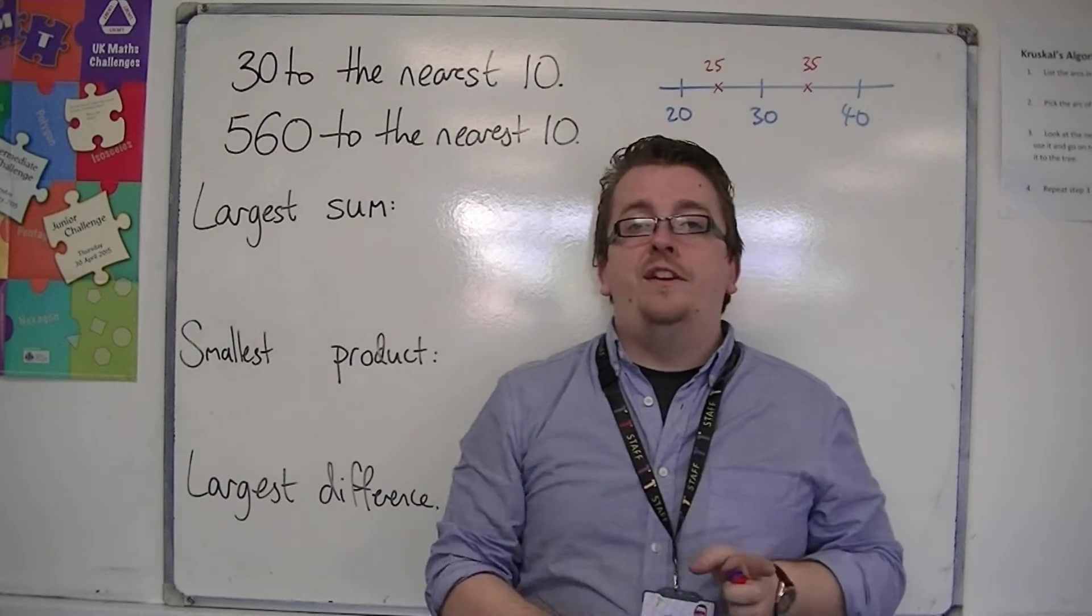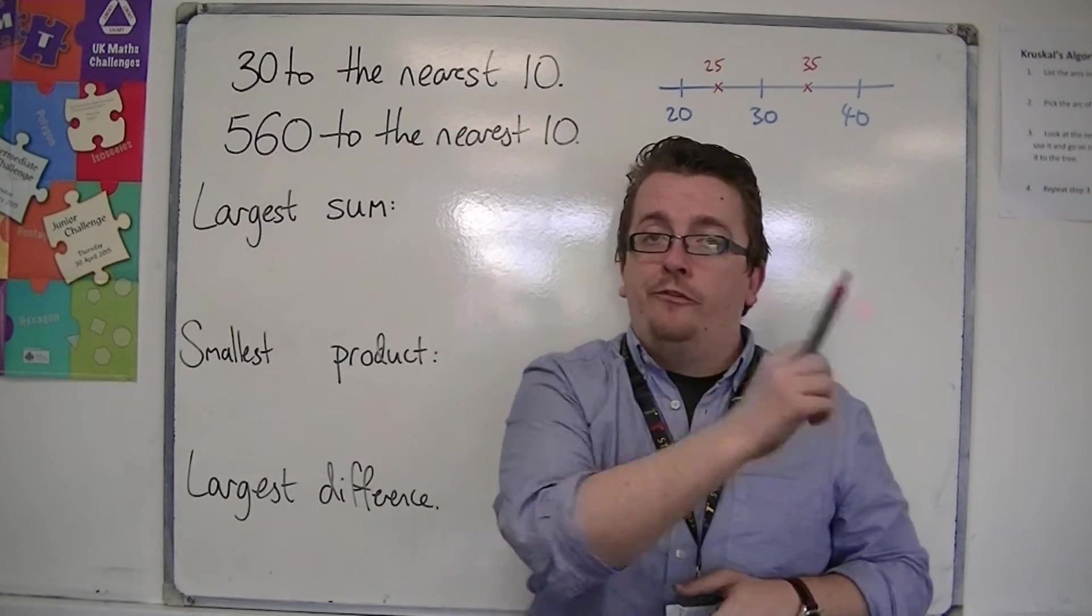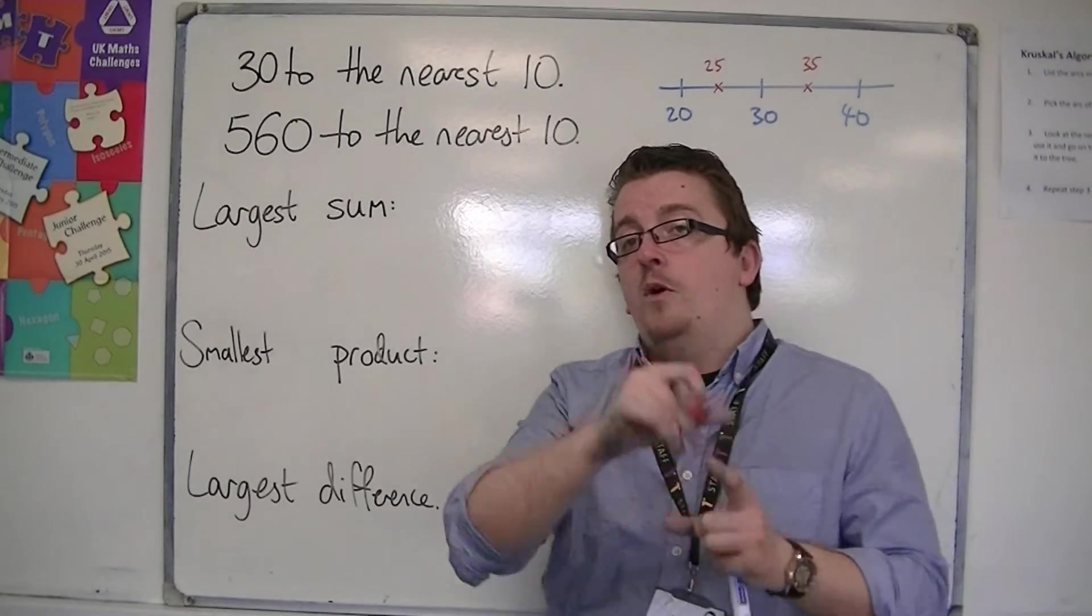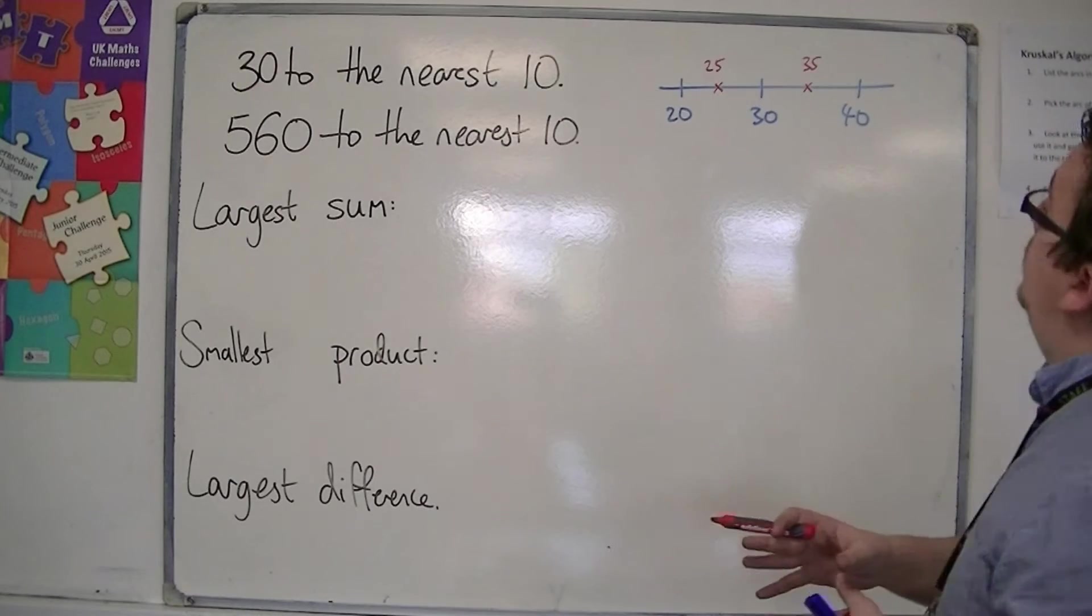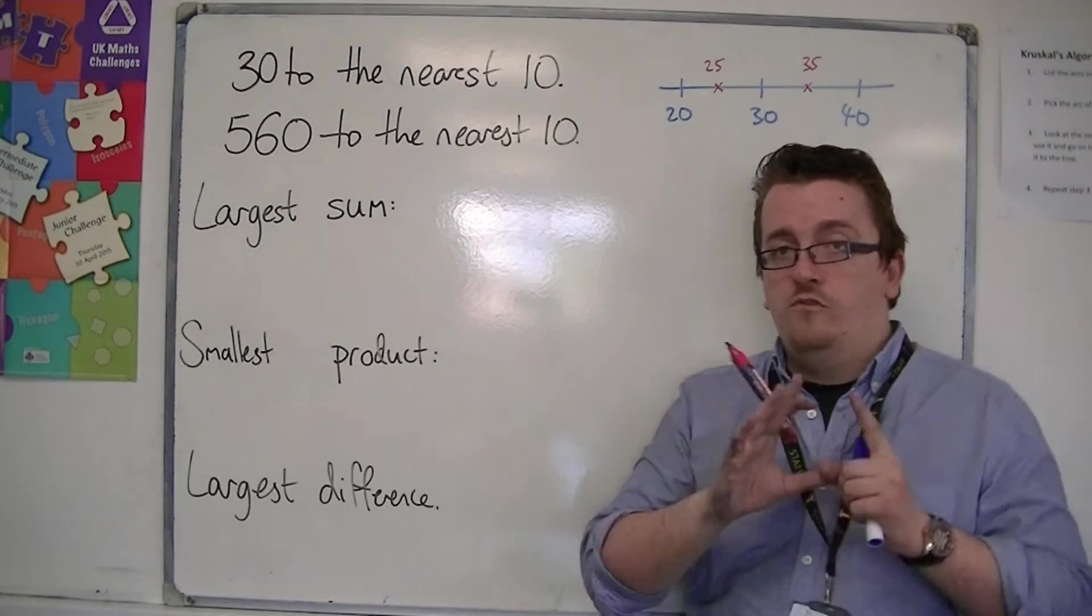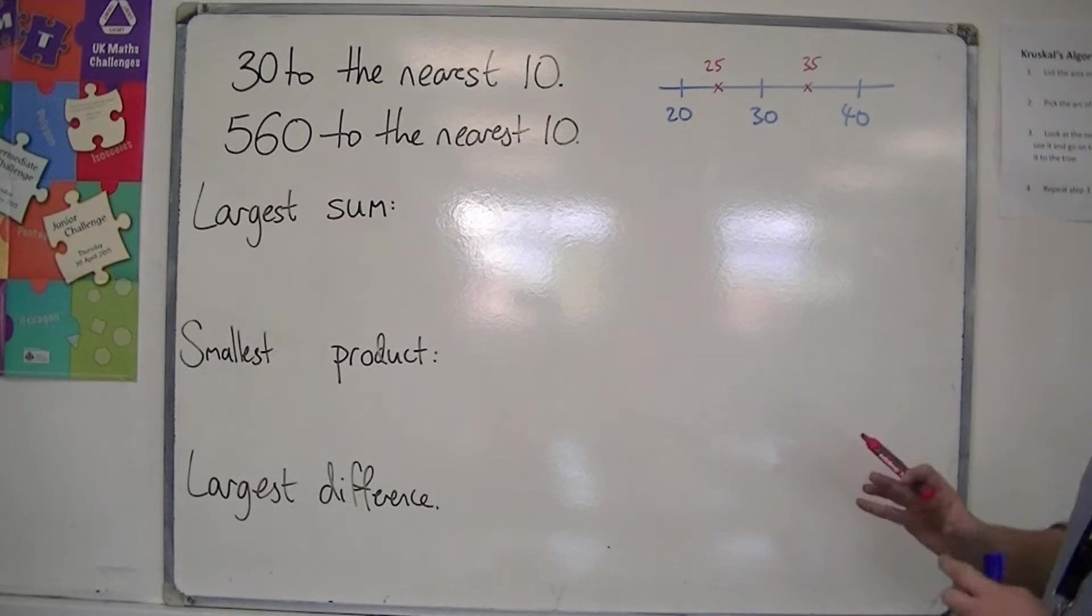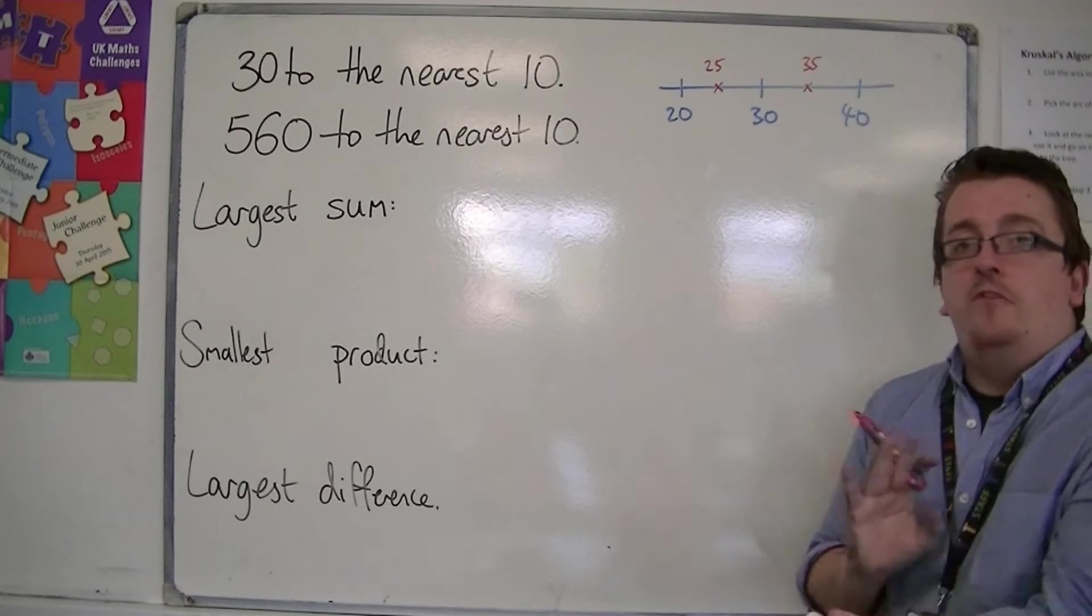Obviously it can't be exactly 35, because then I would have rounded it up to 40. But 34.9 recurring is actually 35. So I'm not going to go through the reasons why that's true, but it could be anywhere between 25 and 35.